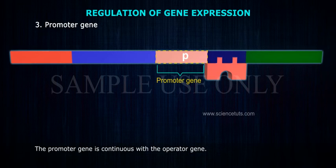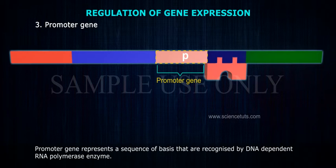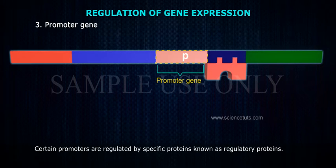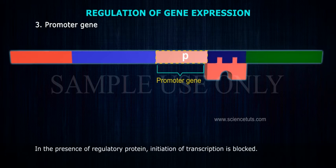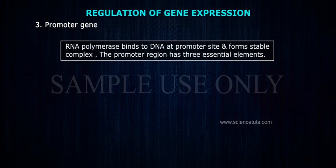The promoter gene is continuous with the operator gene. The promoter gene represents a sequence of bases that are recognized by DNA-dependent RNA polymerase enzyme. Certain promoters are regulated by specific proteins known as regulatory proteins; in the presence of a regulatory protein, initiation of transcription is blocked. RNA polymerase binds to DNA at the promoter site and forms a stable complex.